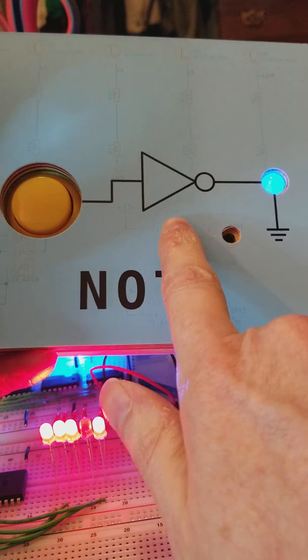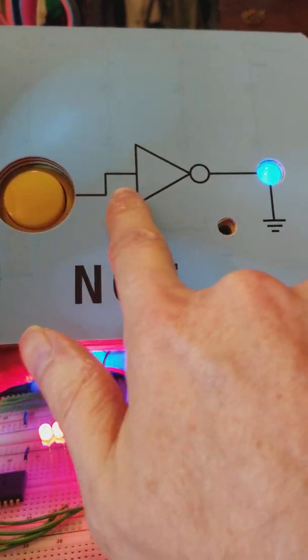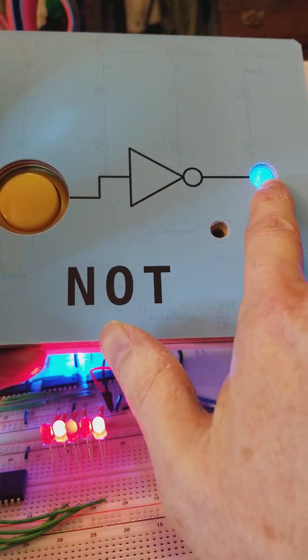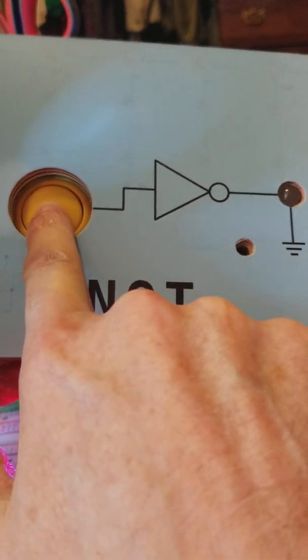Here's just a single NOT gate. So we can see there's no power here which means there is power here and the light's already on. But if we push the button, the light goes off.